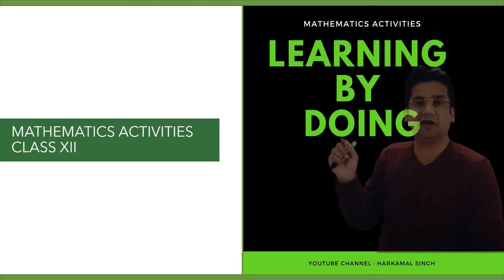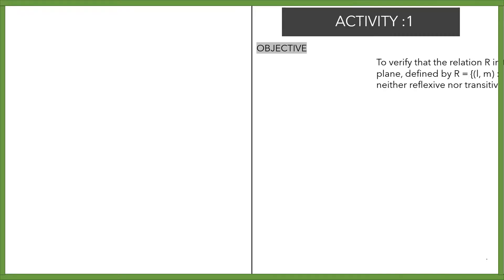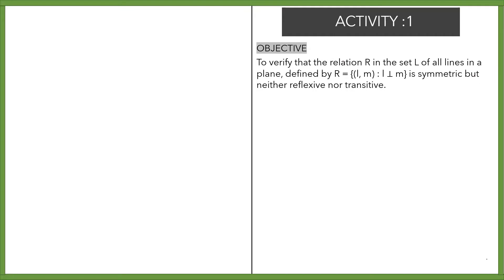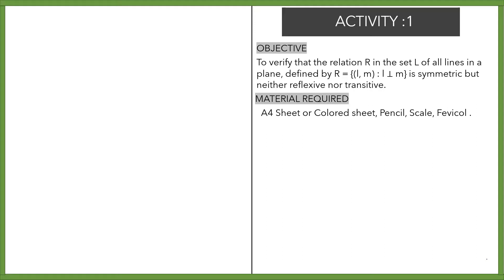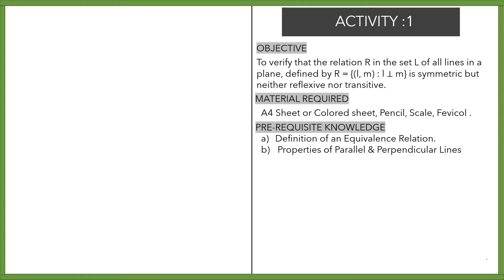Hello everyone, today we'll be doing a mathematics activity for class 12. Activity number one: the objective is to verify the relation R in the set L of all lines in a plane, defined by L is related to M such that L is perpendicular to M, is symmetric but neither reflexive nor transitive. Materials required are a color sheet, pencil, scale, and Fevicol. Pre-requisite knowledge: definition of equivalence relation and properties of parallel and perpendicular lines.